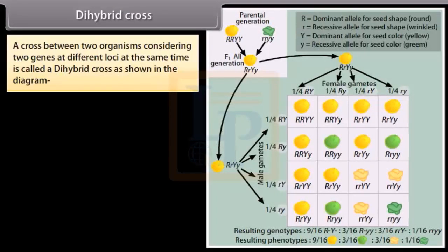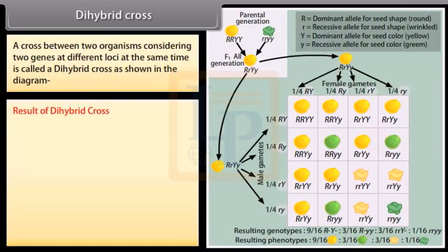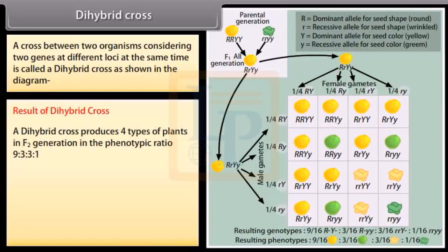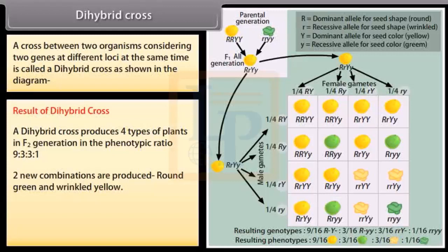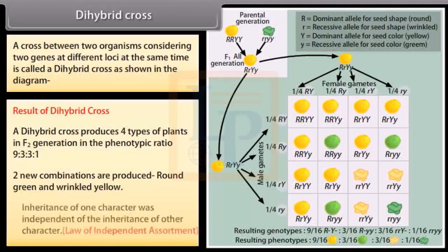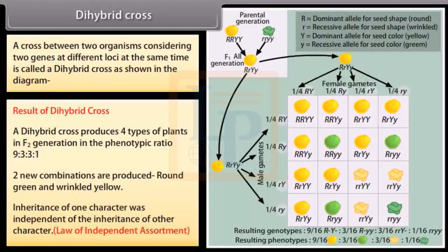Dihybrid cross. A cross between two organisms considering two genes at different loci at the same time is called a dihybrid cross, as shown in the diagram. Result of dihybrid cross: a dihybrid cross produces four types of plants in F2 generation in the phenotypic ratio 9:3:3:1. Two new combinations are produced: round green and wrinkled yellow. Inheritance of one character was independent of the inheritance of other character. Law of independent assortment.